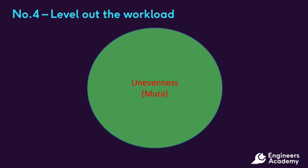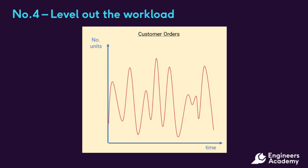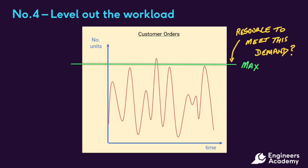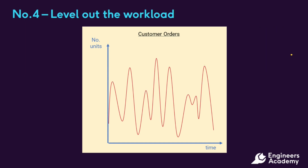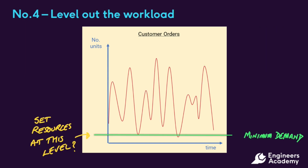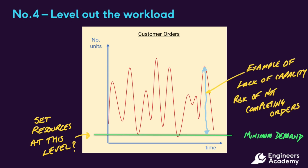The graph represents customer demand against time, and as we can see there is a fluctuating demand level. If we set our processes and systems up to meet the maximum demand, when it drops off we will have wasted capacity and manpower. Alternatively, if we set up for minimum demand, we will get failed order achievement and demands for excessive overtime. So we can see that fluctuating demand creates problems — it creates problems for us to know what capacity to plan for and what manning levels to build.